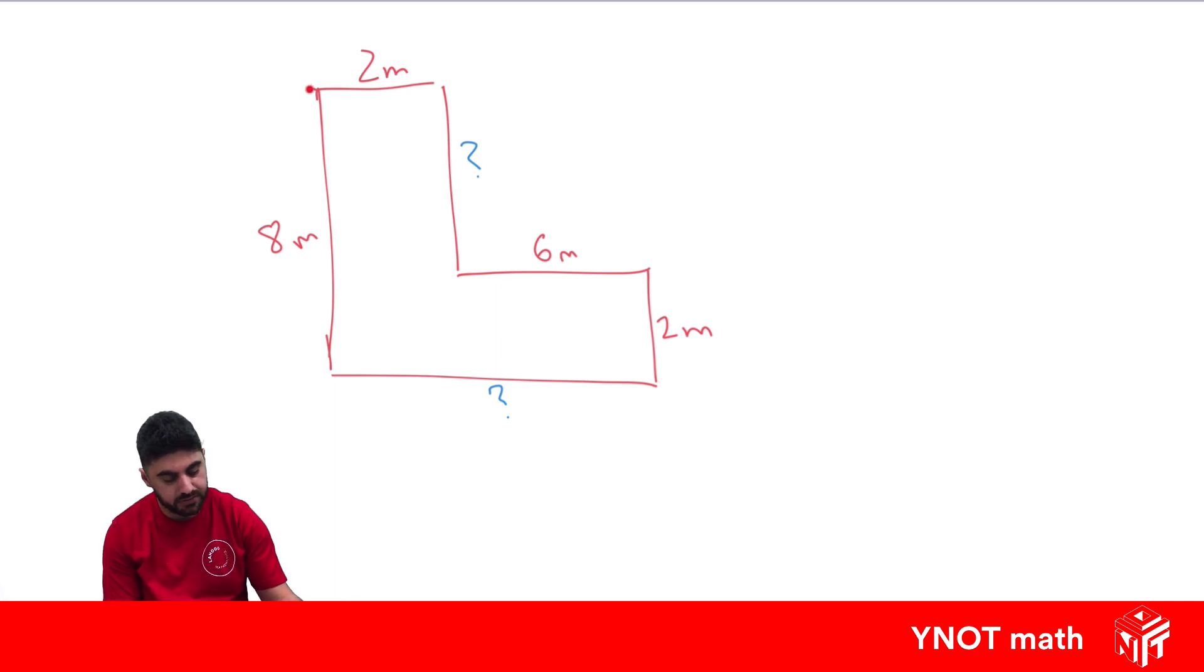So we know this is eight meters and this is two meters. So this and this join together need to equal this one. Therefore this side here must be six meters. So the six and the two make up the eight. With similar logic we know that this two meters plus this six meters is going to equal this eight meter length.